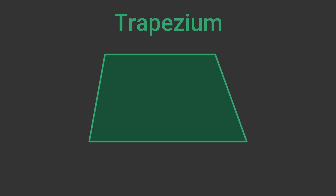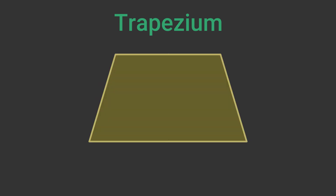A trapezium has no lines of symmetry. An isosceles trapezium is one where the two sloping sides have equal but opposite angles. It has one vertical line of symmetry.